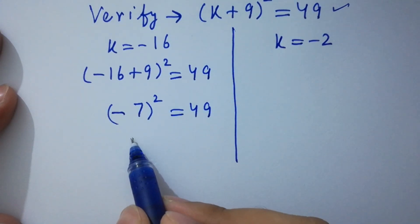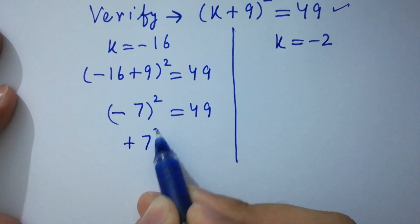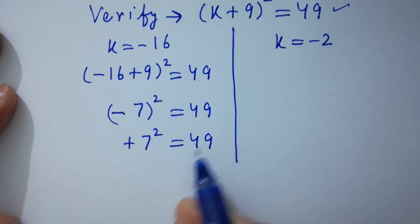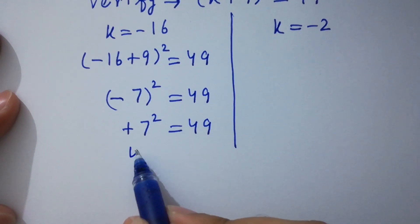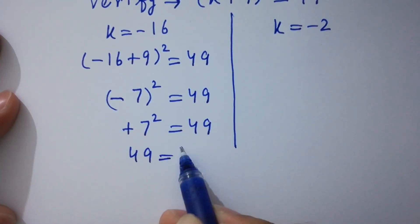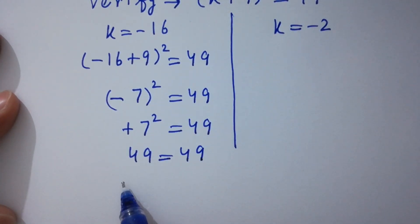Minus minus plus. We have here +7² = 49. 7 times 7 is 49. 49 equal to 49. Left-hand side equal to right-hand side.